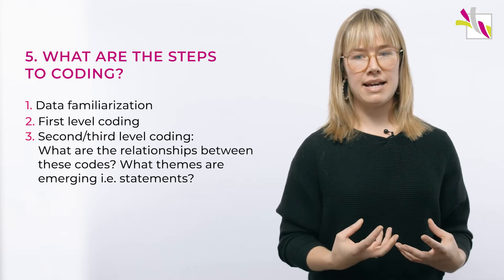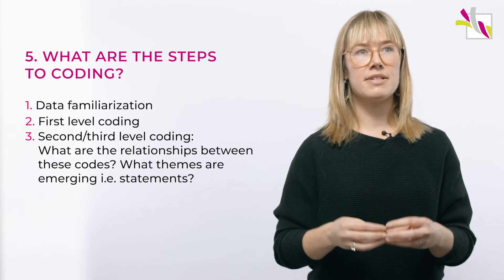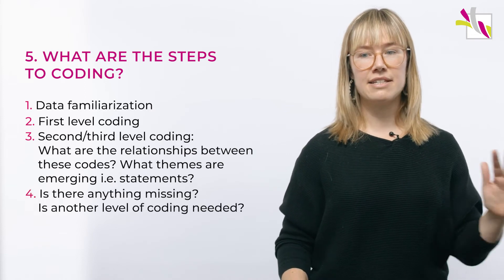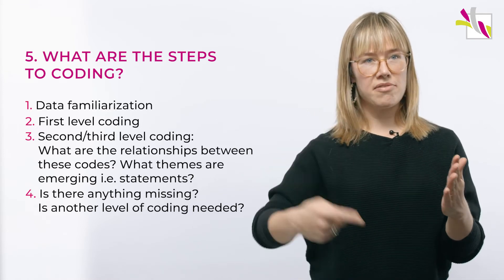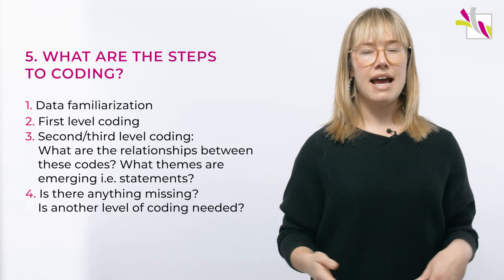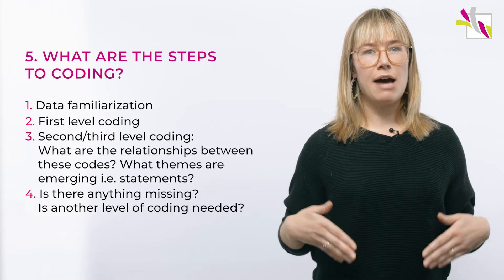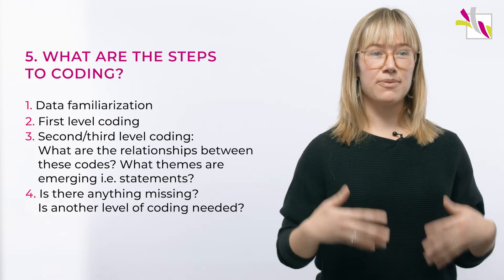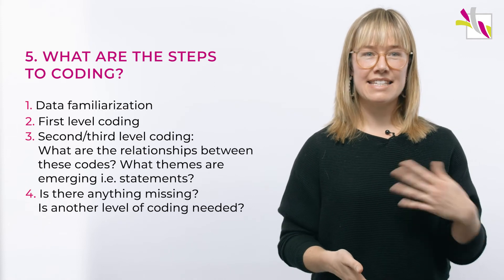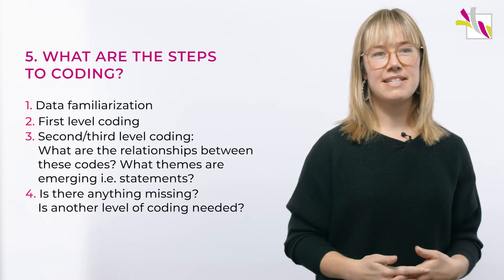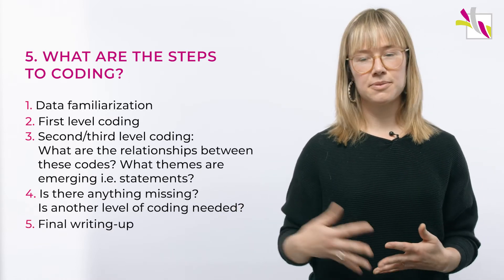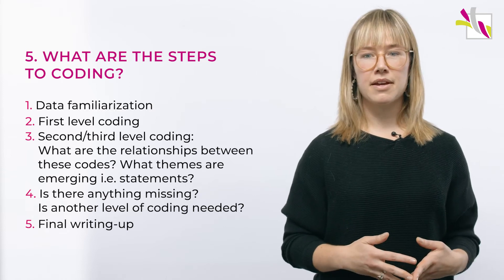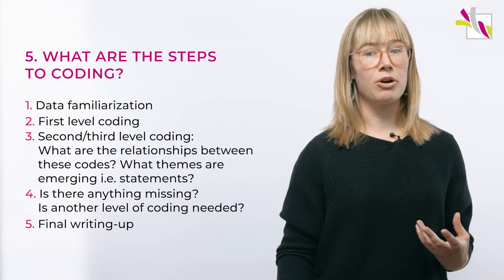Then we do a second level of coding to start exploring the relationships between these codes. Can I start to group them in certain ways? What are the themes that are emerging? How would I write certain statements — i.e. themes — from these codes? Then, is there anything missing? Do I need to do another level of coding? Are there different relationships starting to emerge? This is a reflexive process — think of it as a spiral. At each of these steps you need to justify your research decisions, and this is done in your research diary. Your final step is writing this up as your thesis or article — your chance to tell the story you've been developing and why you've deemed certain themes as more important than others.